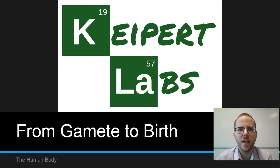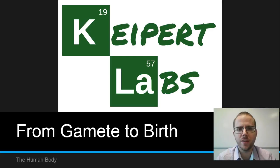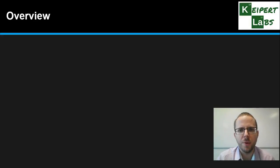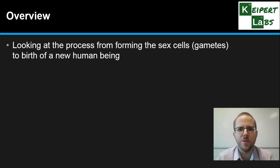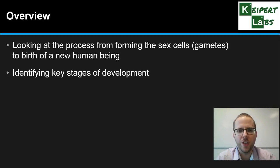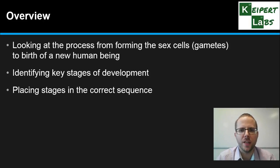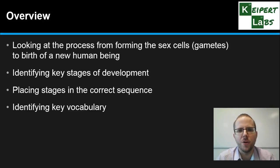Hi everyone. In this screencast today we're going to be looking at the reproductive system, identifying all the stages that happen from the production of the sex cells — the gametes — all the way through to the birth of a human baby. We'll look at key stages of development in their correct sequence and identify some key vocabulary. Make sure you're taking notes closely as you watch.